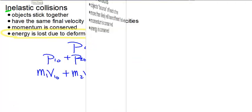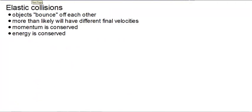So that's a not-elastic collision. So of course, that's going to lead us to elastic collisions. When you have an elastic collision, a perfectly elastic collision, objects will bounce off of one another and more likely have different final velocities. On a rare occasion, they could have the same final velocity, but that is very few and far between. Momentum, of course, is always conserved. In this case, energy is also conserved.